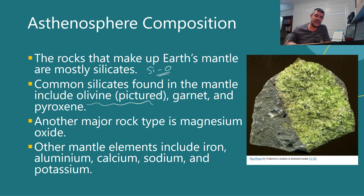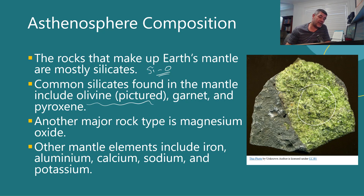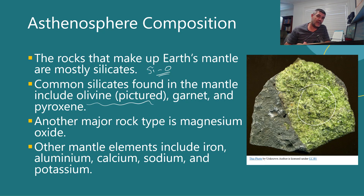One particularly important mineral is olivine — a green mineral. Sometimes material moves to the surface from below; xenoliths, discussed previously, give us clues about rocks from other places with minerals not native to where they're found. Olivines, garnets, and pyroxenes are characteristic silicates found in mantle rocks. Magnesium oxide is another key component, and smaller amounts of iron, aluminium, calcium, sodium, and potassium can also be found in mantle minerals.